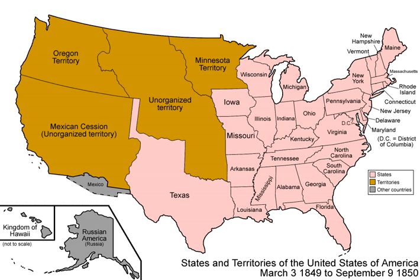The Compromise proved widely popular politically, and both parties committed themselves in their platforms to the finality of the Compromise on sectional issues. The strongest opposition in the South occurred in the states of South Carolina, Georgia, Alabama, and Mississippi, but Unionists soon prevailed, spearheaded by Georgians Alexander Stephens, Robert Toombs, and Howell Cobb and the creation of the Georgia Platform.